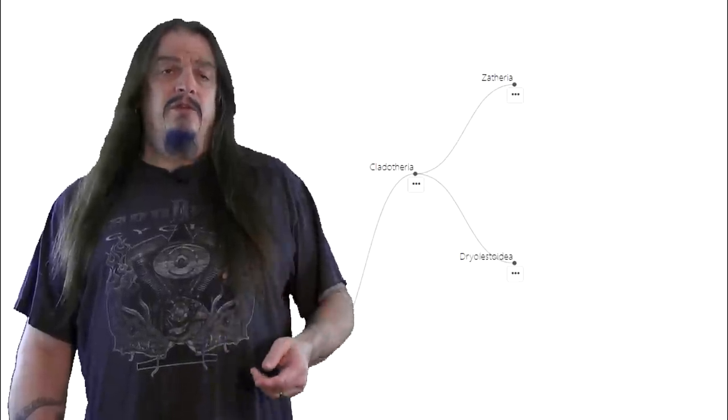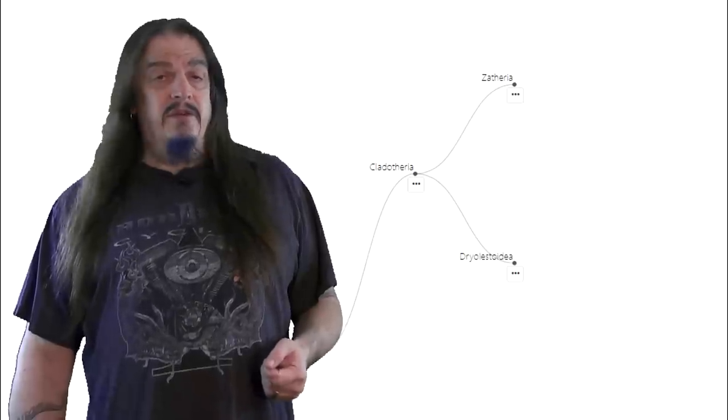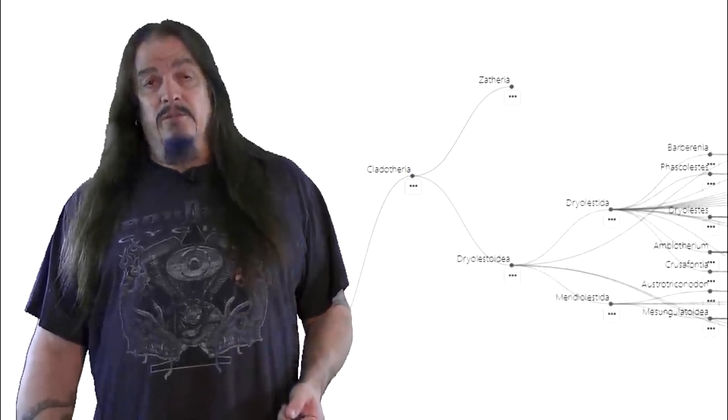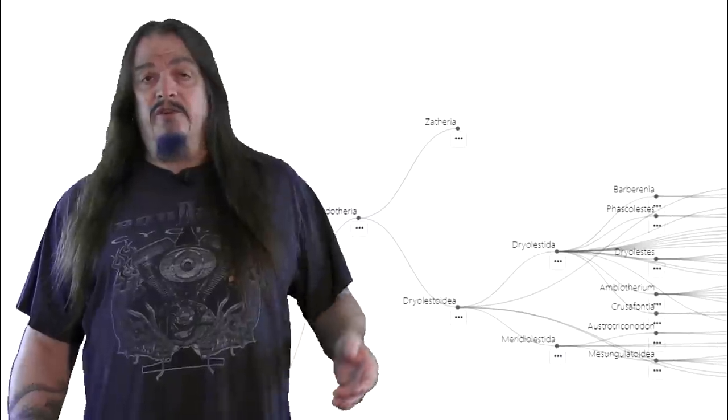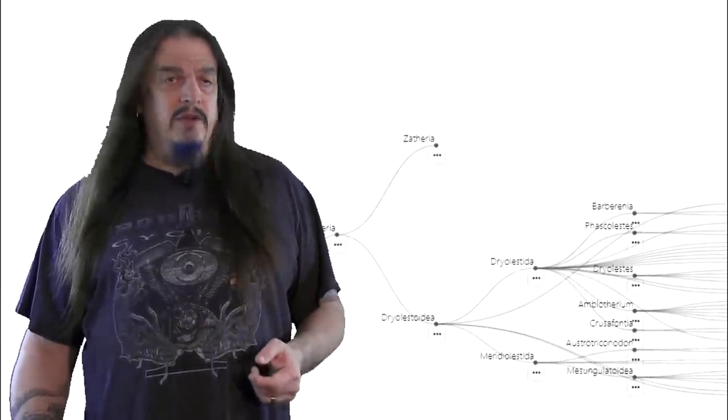The previous episode of the series concerned our placement in the clade of Cladotheres, and now we'll look at the subsets of that group. Unlike large dinosaurs, it's a lot harder to find fossils with small animals, and all our ancestors at that time were squirrel-sized or thereabouts.